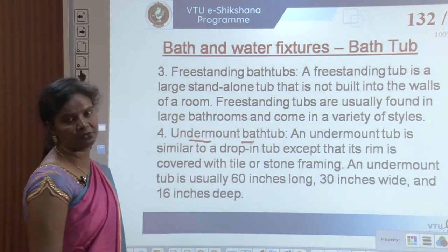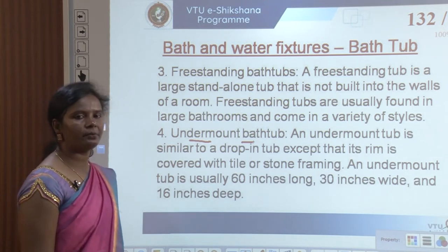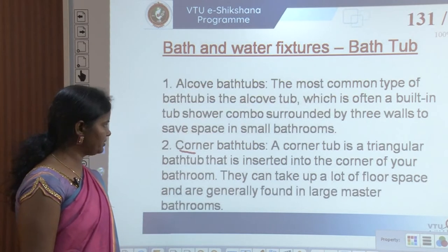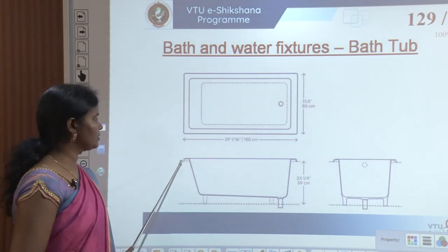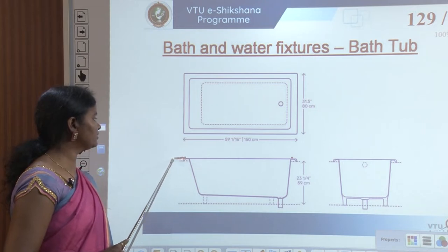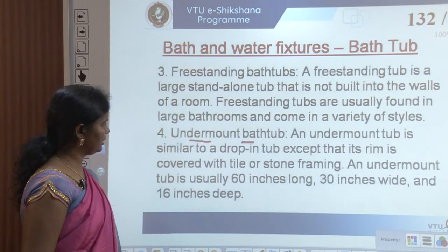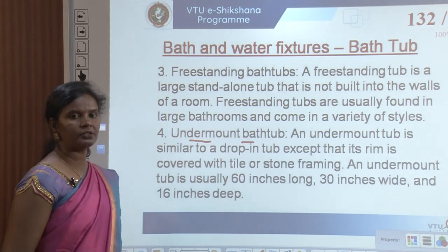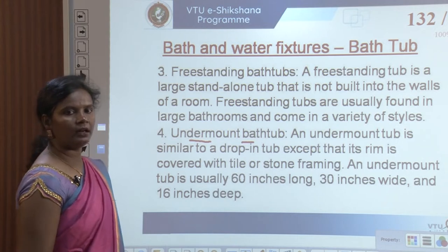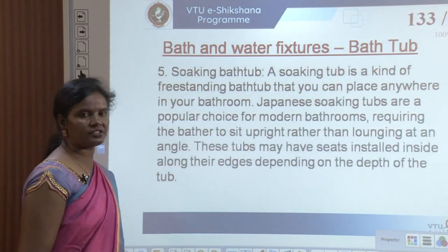Similar to under-mount kitchen sinks, we have under-mount bath tubs. An under-mount bath tub is similar to a drop-in bath tub except that its rim is covered with tile or stone framing. The rim — the top edge of the bath tub — is covered with tiles and the tub is inserted into a constructed tub space. An under-mount tub is usually 60 inches long, 30 inches wide, and 16 inches deep (approximately 1 foot 3 inches deep).